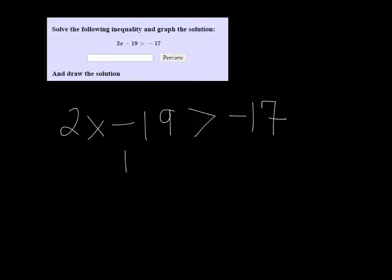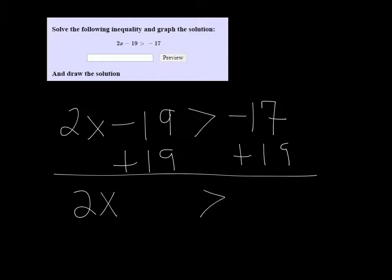So I'm going to add 19 to both sides. And now we have 2x is greater than 2, and then divide by 2.